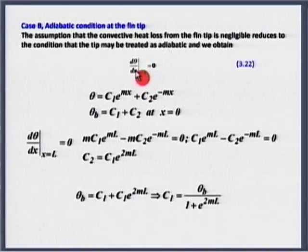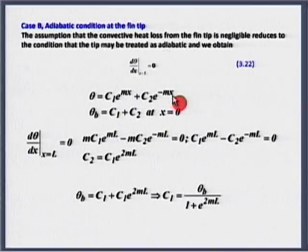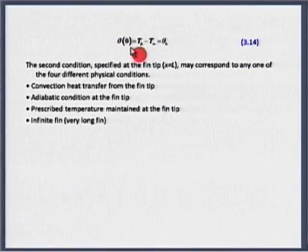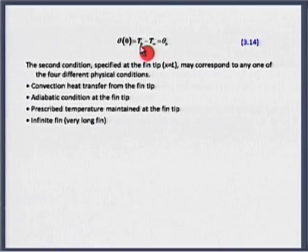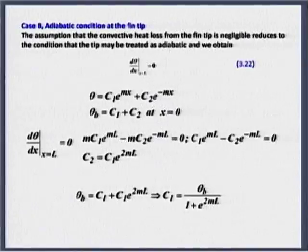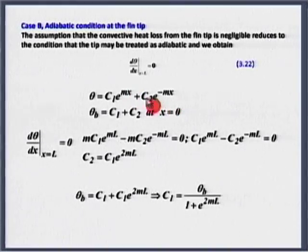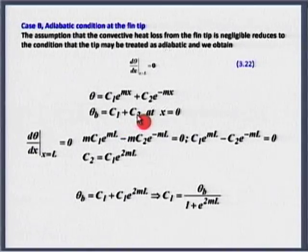Applying boundary conditions: one is dθ/dx = 0 at x = L. θ_b is the base condition — at x = 0, T = T_b, so θ(0) = T_b − T∞ = θ_b. Substituting x = 0 into the solution, e^0 = 1 and e^(−0) = 1, so we get θ_b = C₁ + C₂. That is the first boundary condition applied.